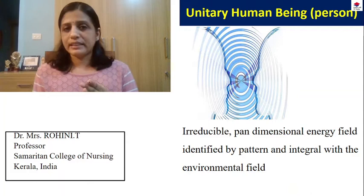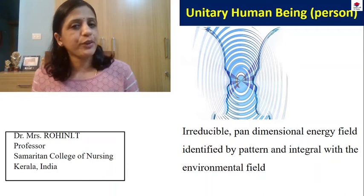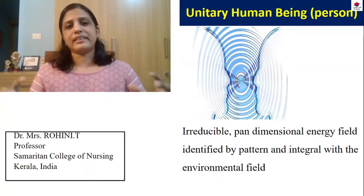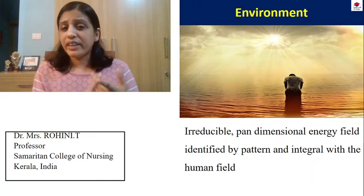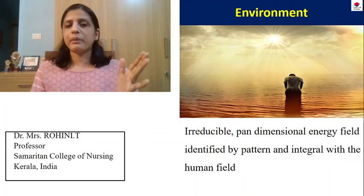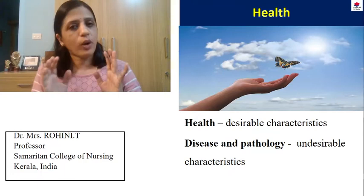When you get an essay question to explain Rogers' theory, remember to write the 5 concepts, 5 assumptions, 3 propositions, and 3 principles of homeodynamics. Now, let us quickly look at the meta-paradigm. We know four concepts: human, environment, health, and nursing. What is human? It is the definition of unitary human being — irreducible, indivisible, pandimensional, having a pattern, and always interacting with the environment. What will you write for environment? The same thing: irreducible, indivisible, pandimensional, having a pattern, and always integrating with the unitary human being.